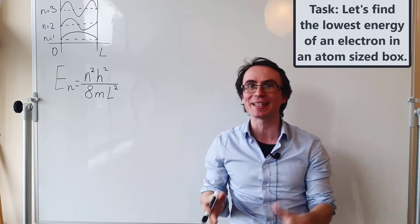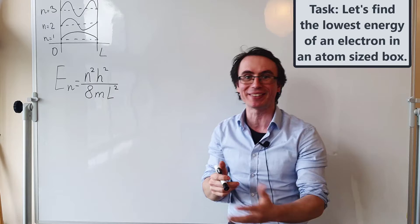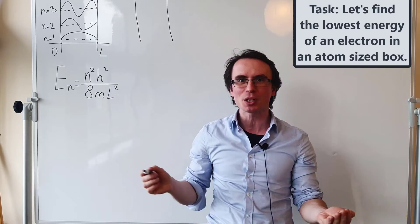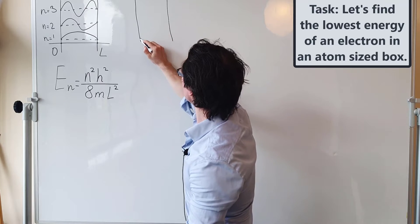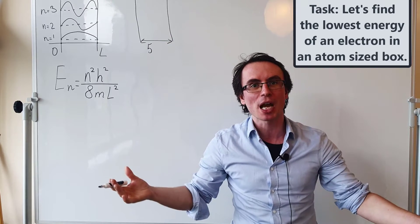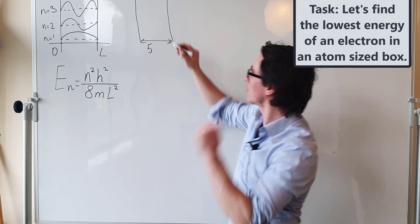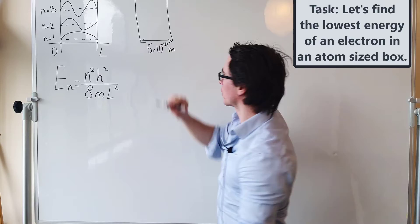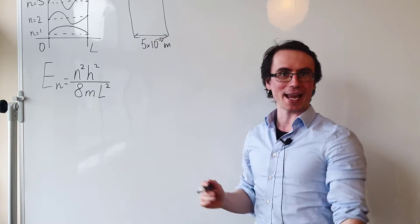Let's find the ground energy of an electron that is trapped within a box that is similar to atomic size. So let's pick the size of the box L to be five times 10 to the power of minus 10 meters. Let's find our lowest energy level.